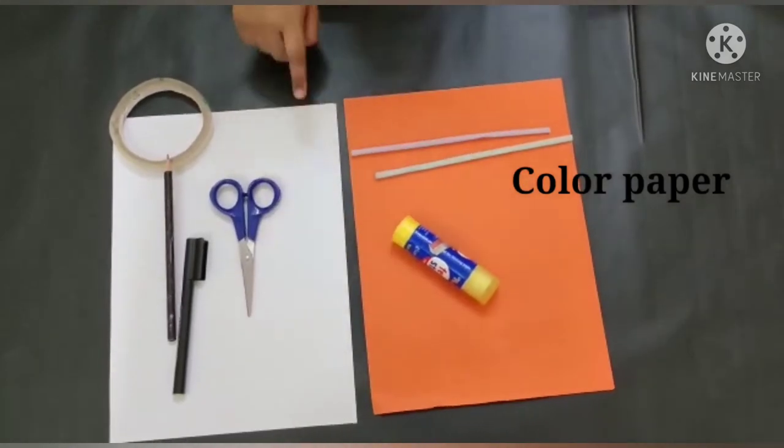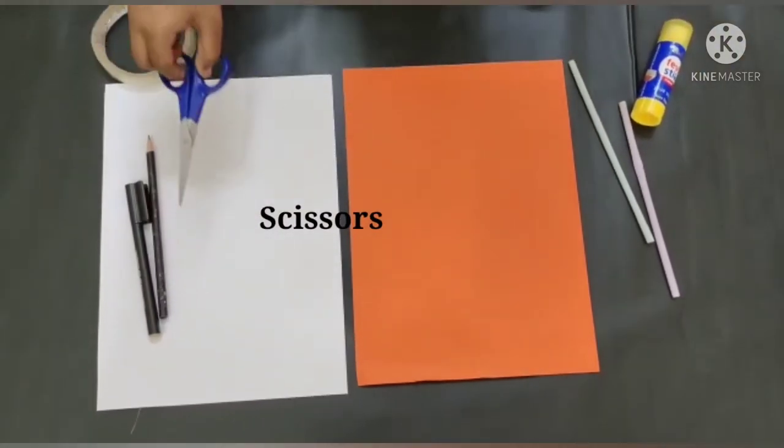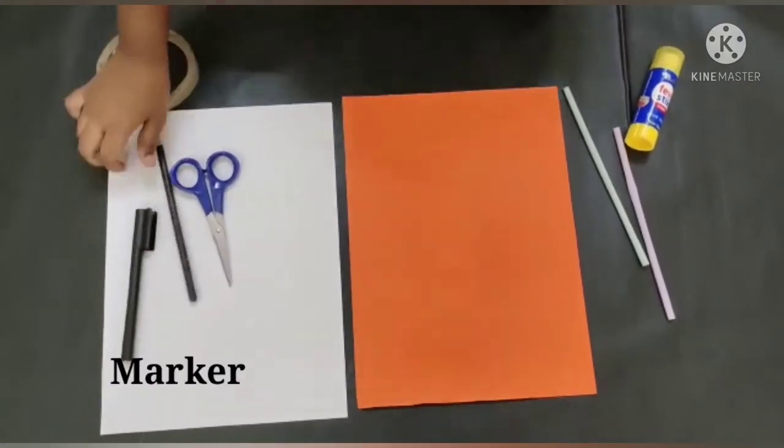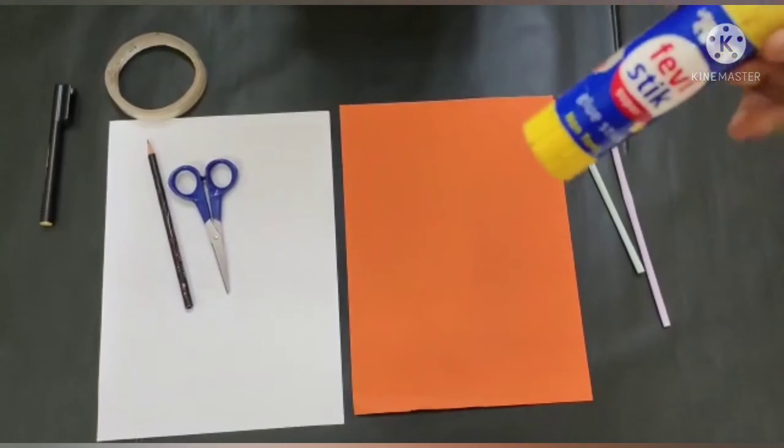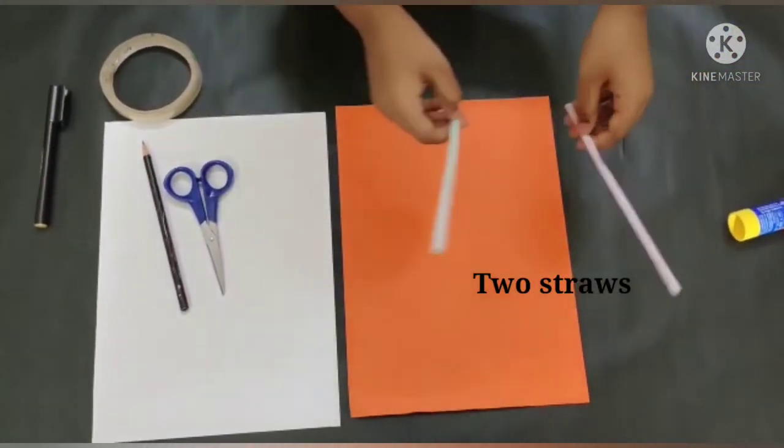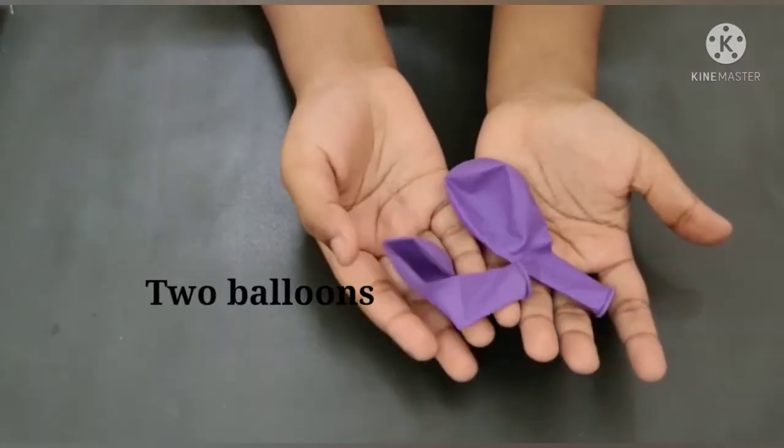First you need a colored paper and a white paper. You need scissors, a pencil, a marker, glue, two straws and tape, and two balloons.